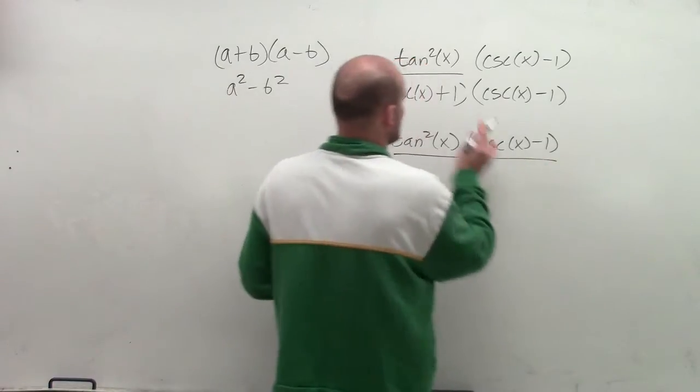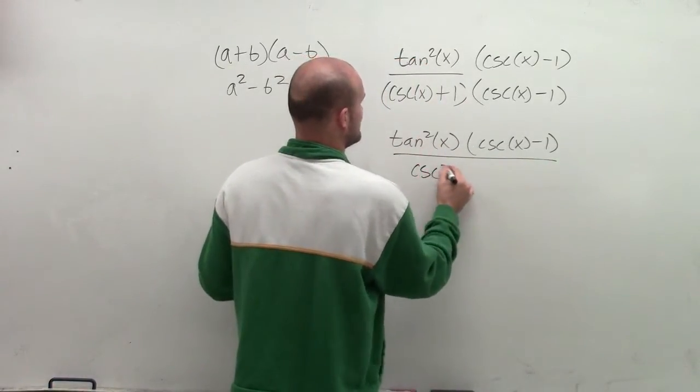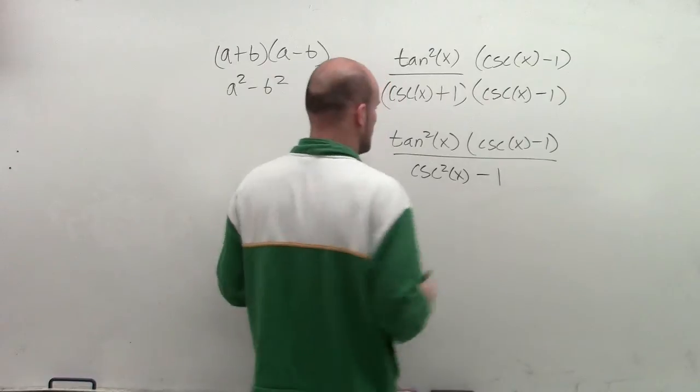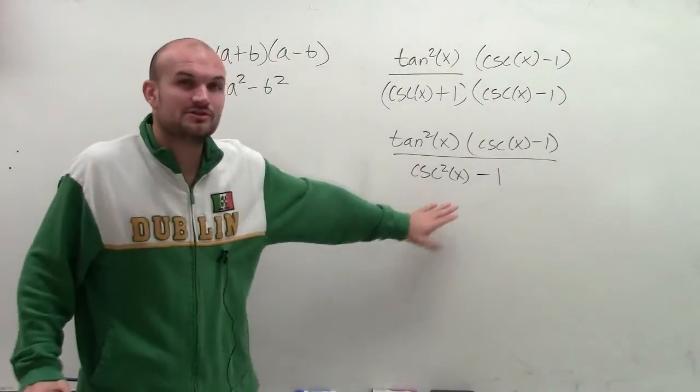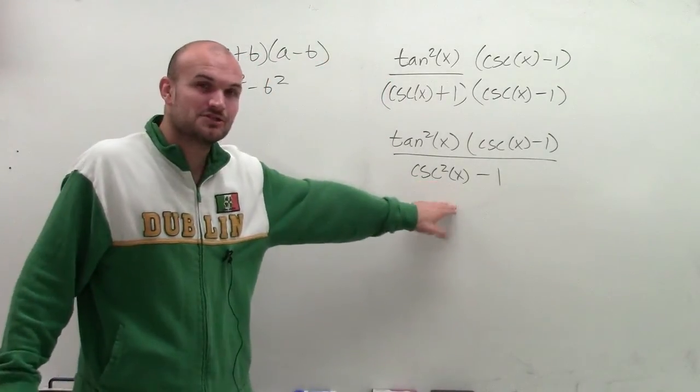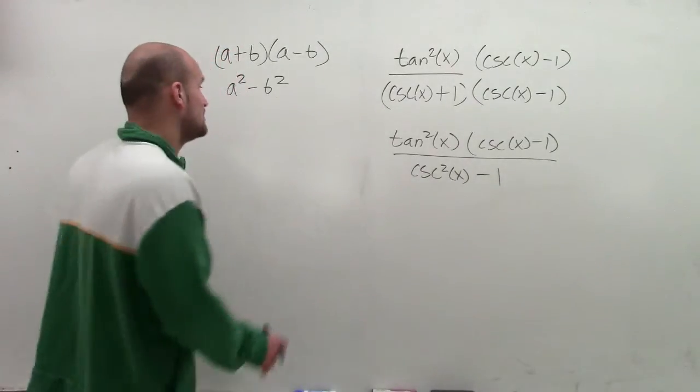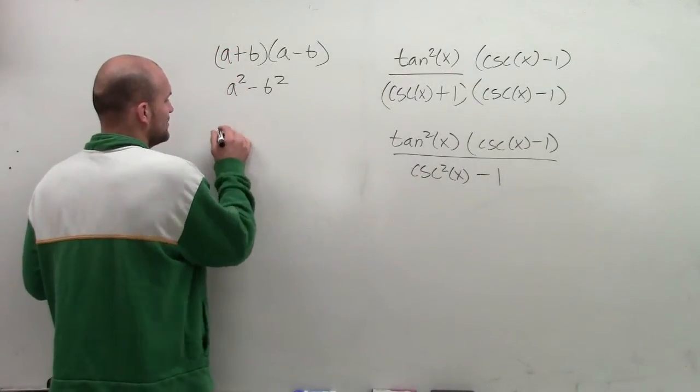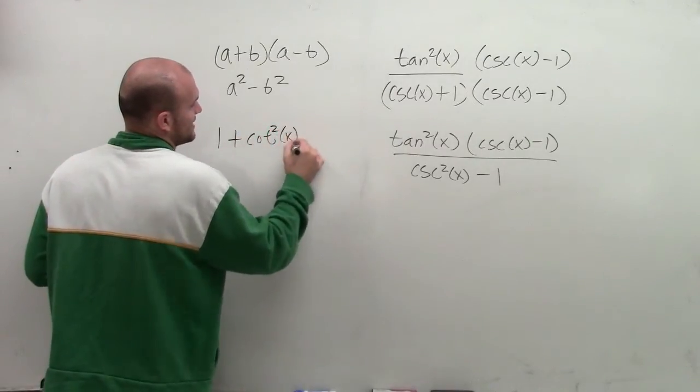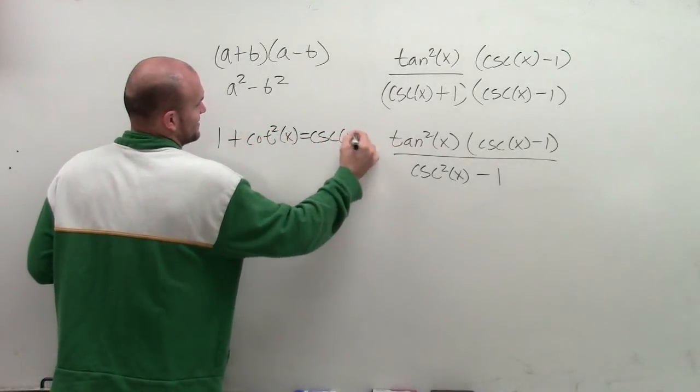So therefore, now that's my numerator and now my denominator is just going to be cosecant squared of x minus 1. So now it's important when using trigonometry, I see my difference of two squares is cosecant squared of x minus 1, which looks very similar to a Pythagorean identity,